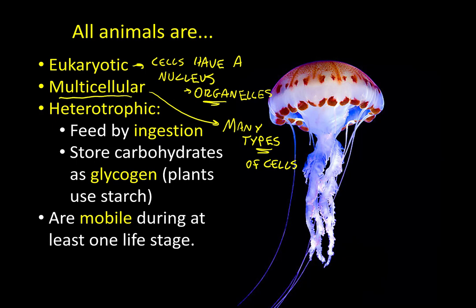All animals are also what's called heterotrophic. 'Hetero' means 'other' or 'different,' and 'trophic' means feeding or feeder. So this word breaks down to 'other feeder' — it means animals have to consume other living things in order to get their energy.